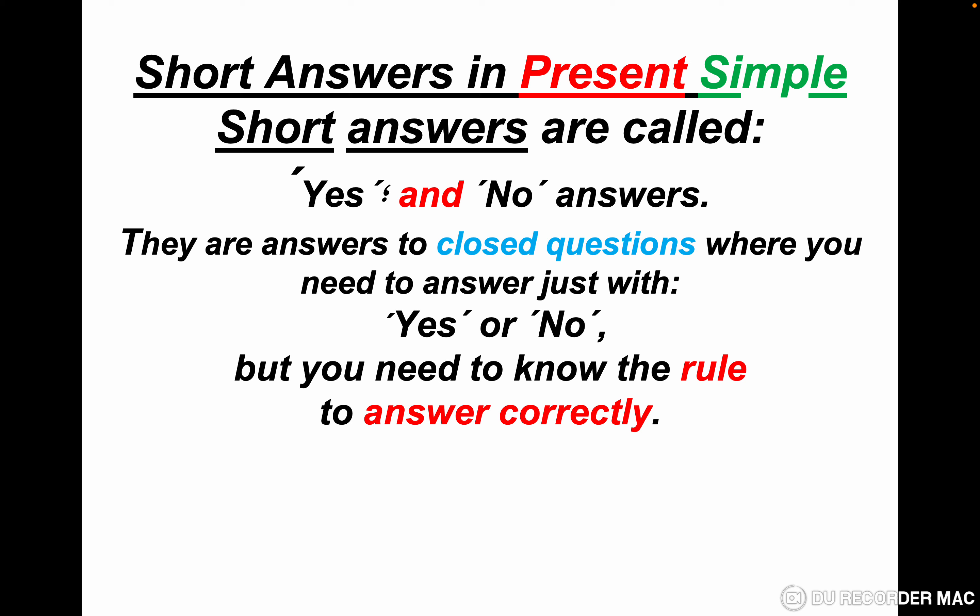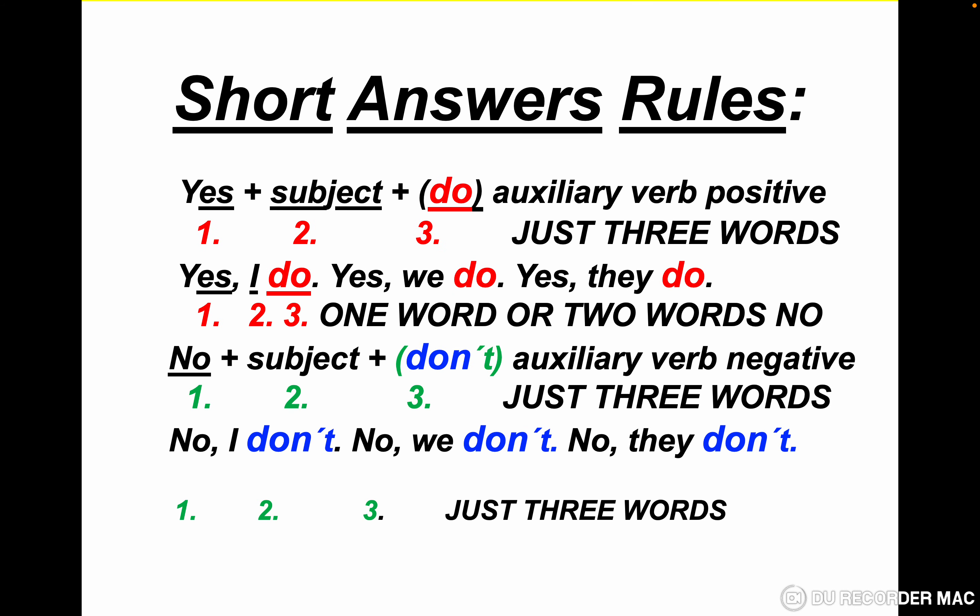But you need to know the rule to answer correctly. Short answers rules: we have yes, plus subject, plus do. Do is the auxiliary verb in the positive form. So this is the rule — yes plus subject plus do. In real answers, we have: yes, I do; yes, we do; yes, they do.